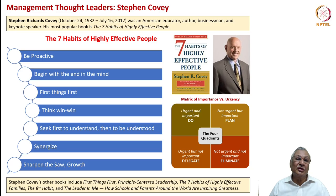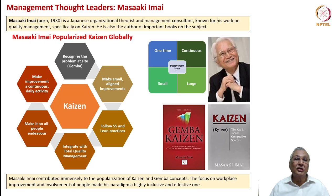Covey's other books include First Things First, Principle-Centered Leadership, The Seven Habits of Highly Effective Families, The Eighth Habit, and The Leader in Me. These books are very easy to read and people should take time to go through them.